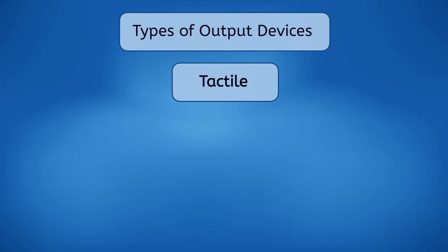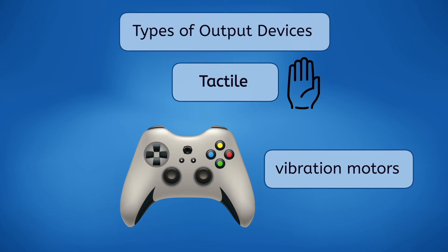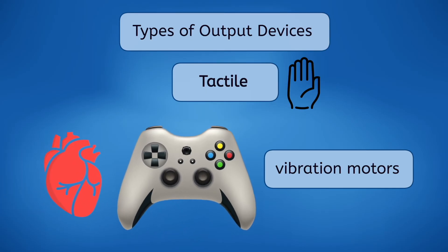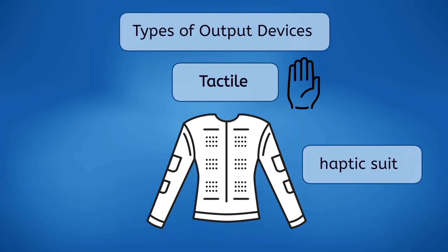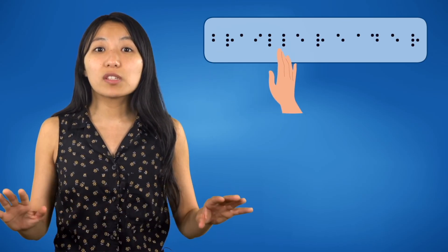Advancing technology has even allowed us to invent tactile output devices — that means you can experience them using your sense of touch. These days, the most well-known would be 3D printers, which take a computer file and turn it into a physical object that you can hold. Another tactile output device you might be familiar with is vibration motors, which are used in game controllers and phones. Some modern controllers use these motors along with haptic technology so that the vibrations mimic things happening in your game, like your character's pulse getting faster when they're scared. Haptic suits are wearable output devices that make your body feel like you're touching or being touched by things that aren't there. For people whose vision is impaired, tactile output devices can be extremely useful, like braille displays, which convert written text on the computer into raised dots that form lines of braille so that those with low vision can read what's on the computer using their sense of touch.